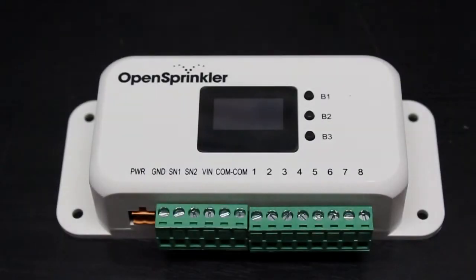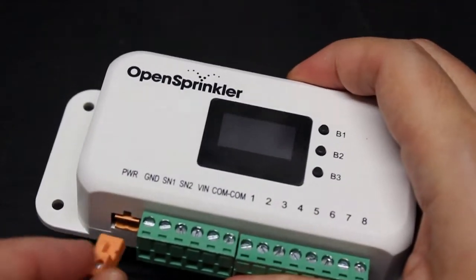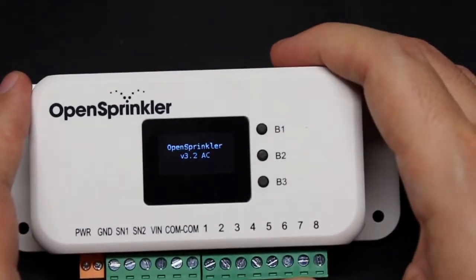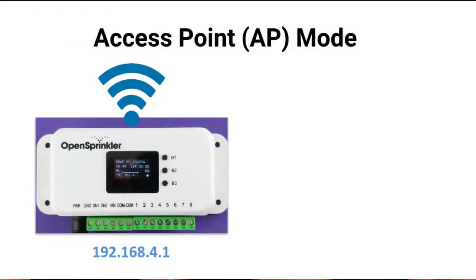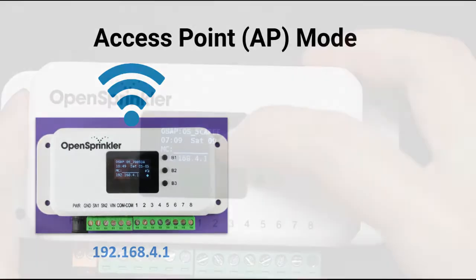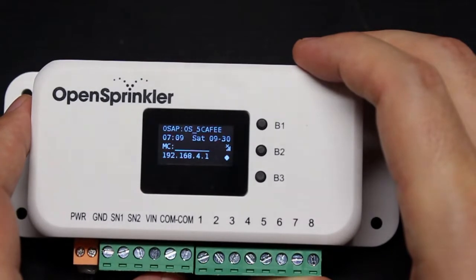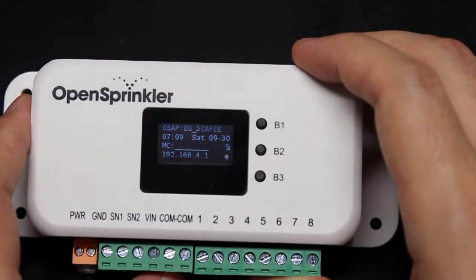Before we start, let me explain the two modes of Wi-Fi. The first time you power up OpenSprinkler, or upon each factory reset, the controller starts in what's called the access point or AP mode. In this mode, the controller itself behaves like a Wi-Fi router. It broadcasts a Wi-Fi SSID which is printed on the LCD screen, and the whole point of this is to allow it to complete the Wi-Fi configuration.